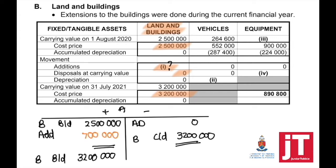So the difference is the additions of 700,000. When we look at the cash flow statement, we need to find out in the investing activity what was the proceeds from the sale of assets and what was the purchase of non-current assets. So these additions would form part of the purchase of non-current assets.